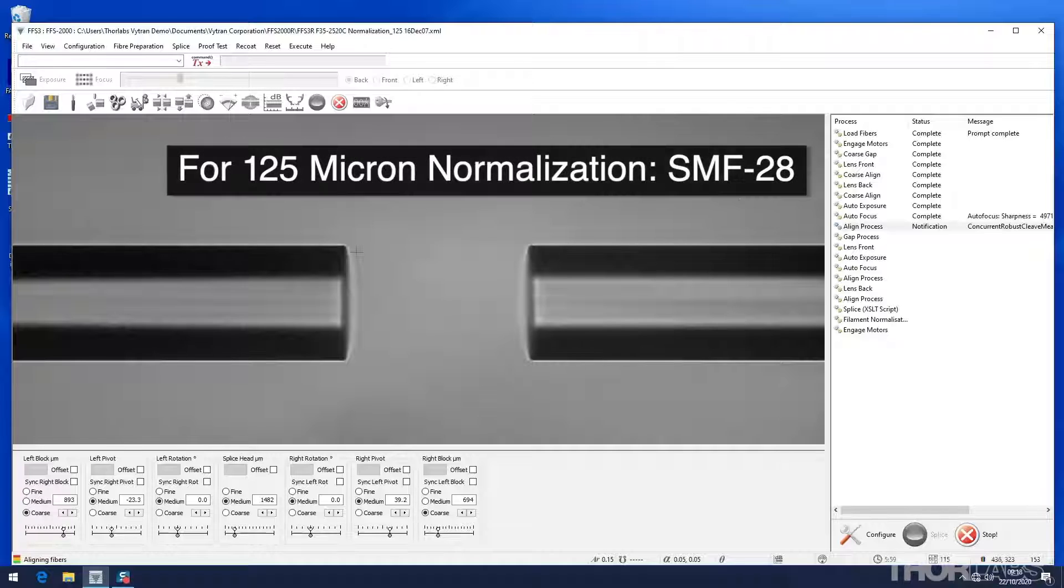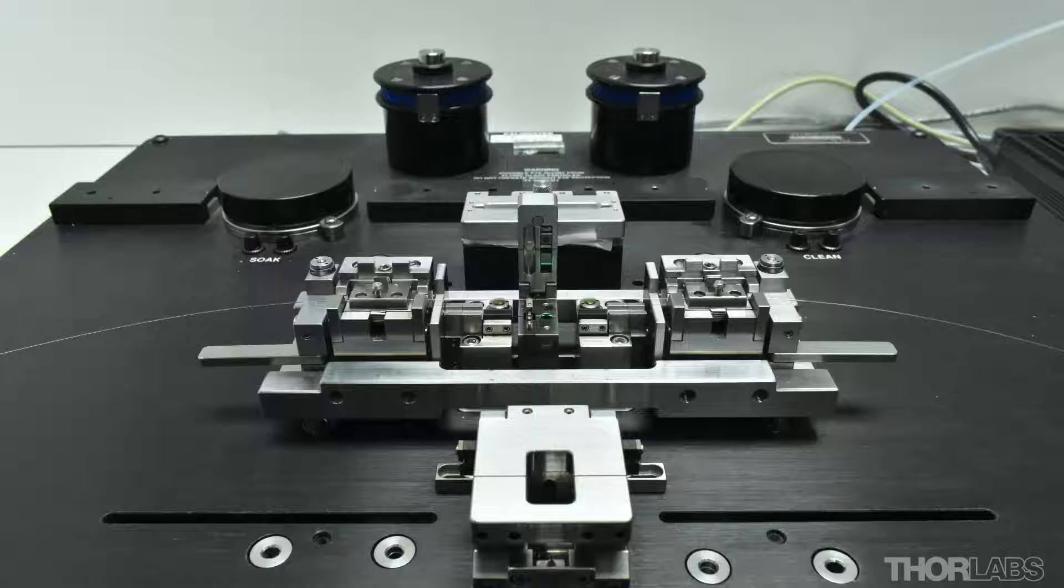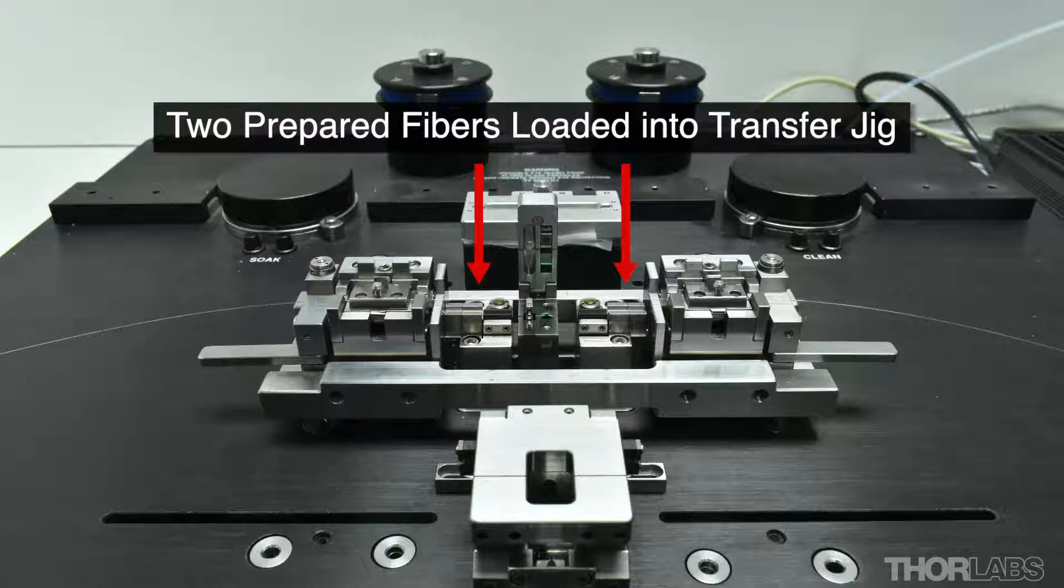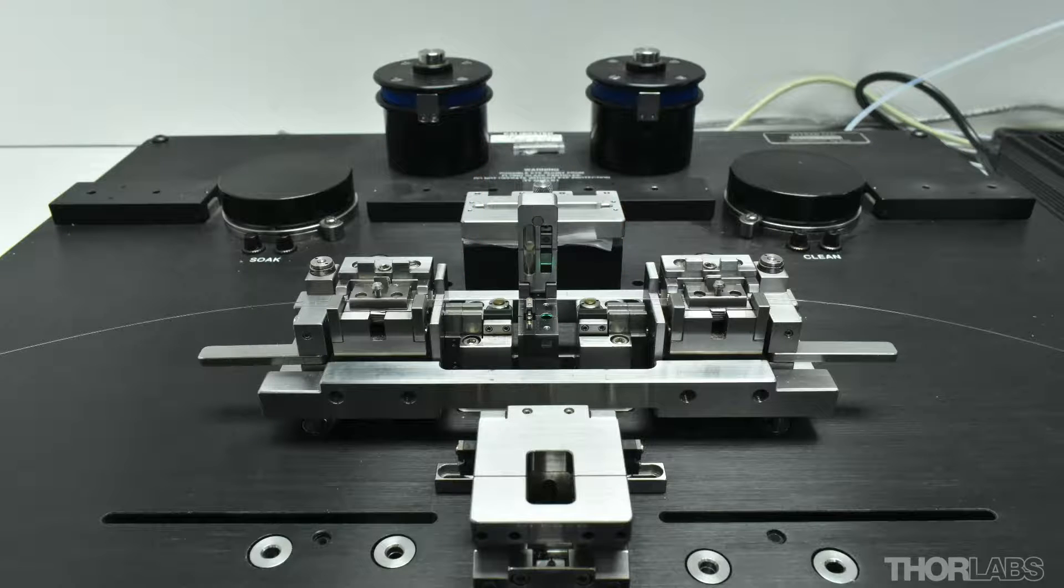For normalizing 125 micron fiber we recommend Corning SMF 28. To carry out a filament normalization, first use the strip, clean and cleave stations on the unit to prepare two fibers of the required diameter and have them loaded into the transfer jig waiting at the splice station.